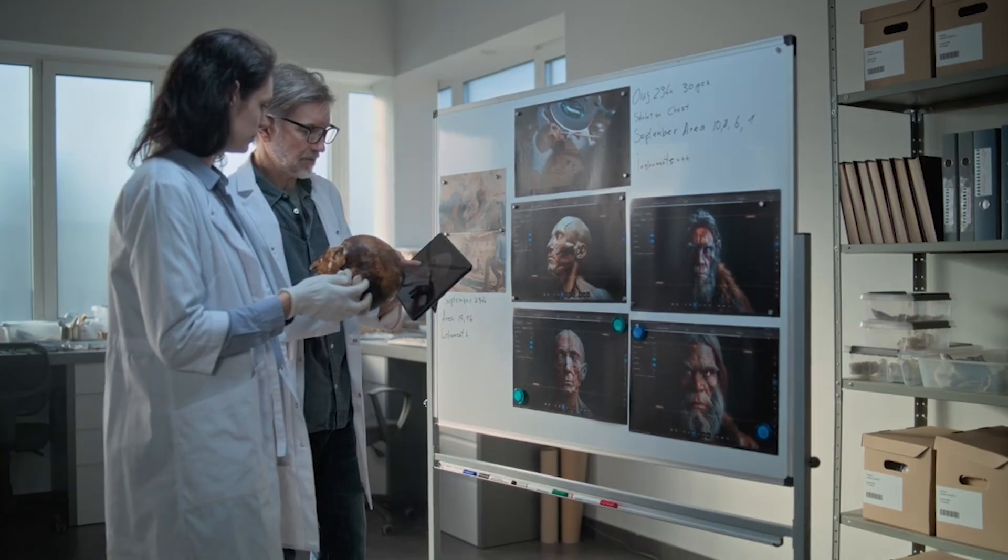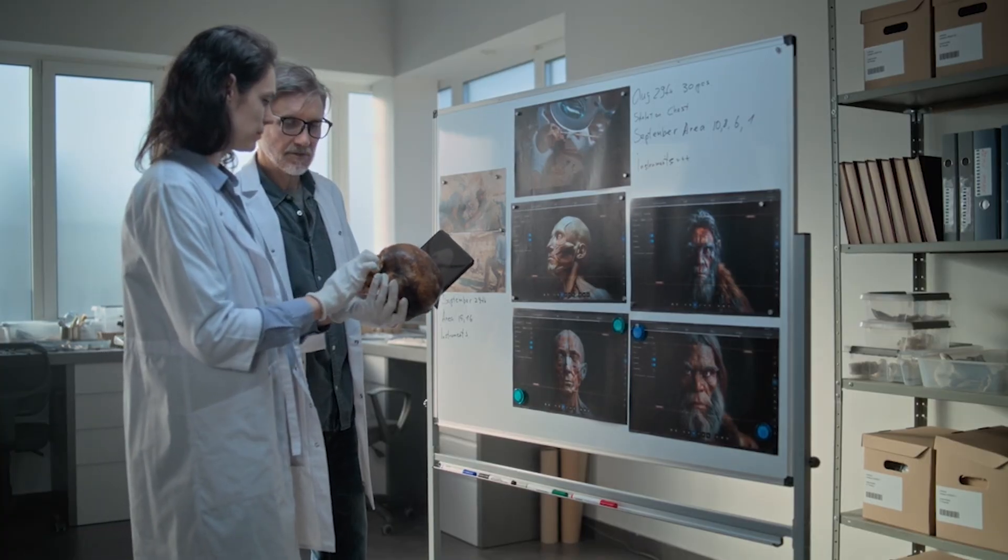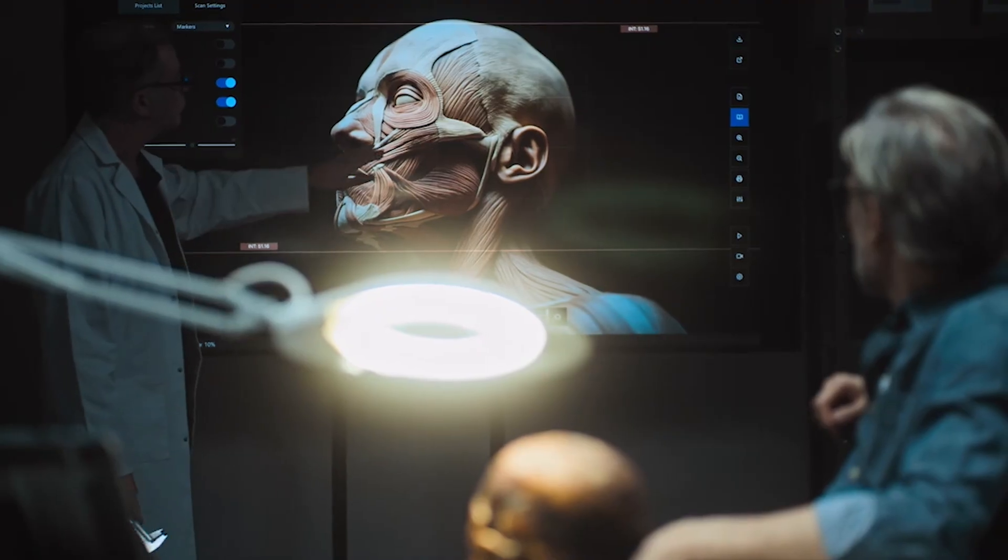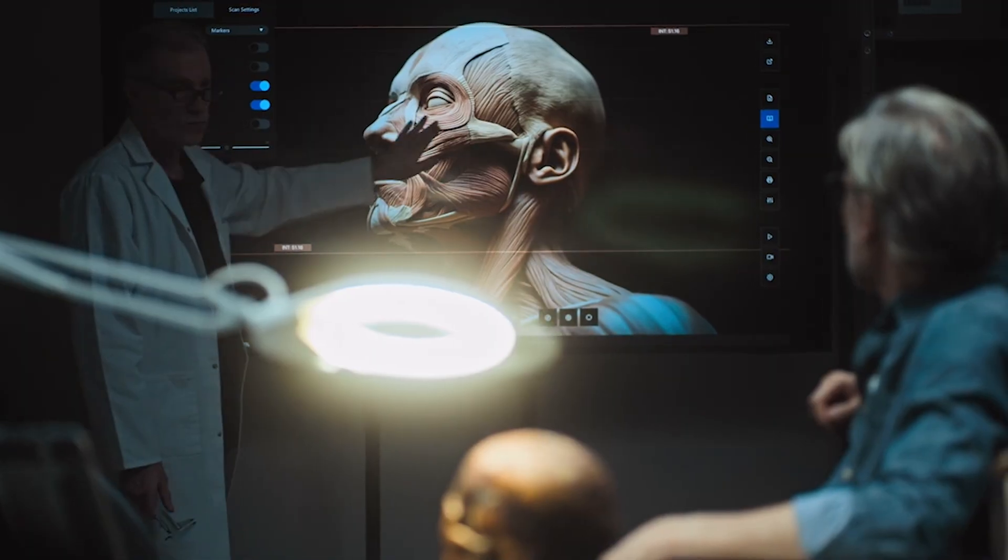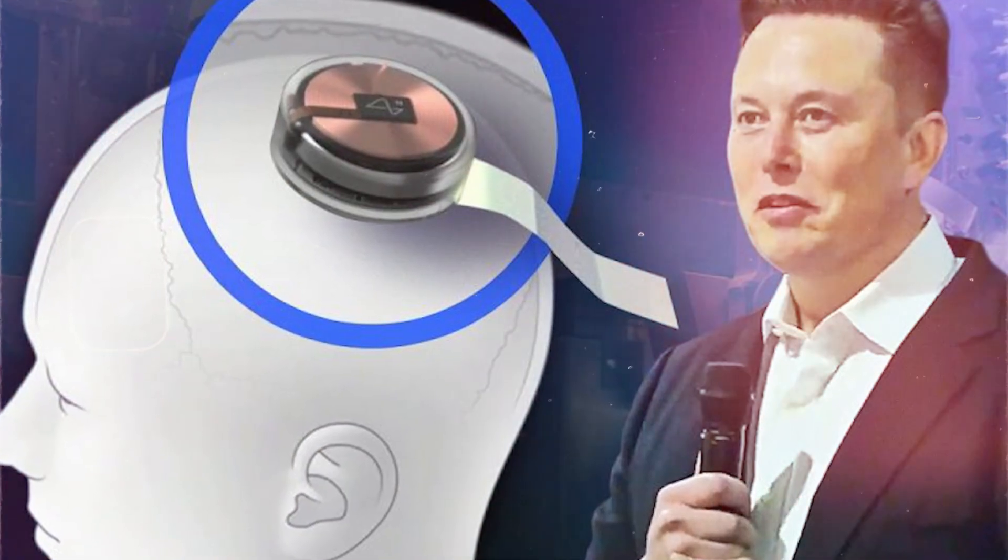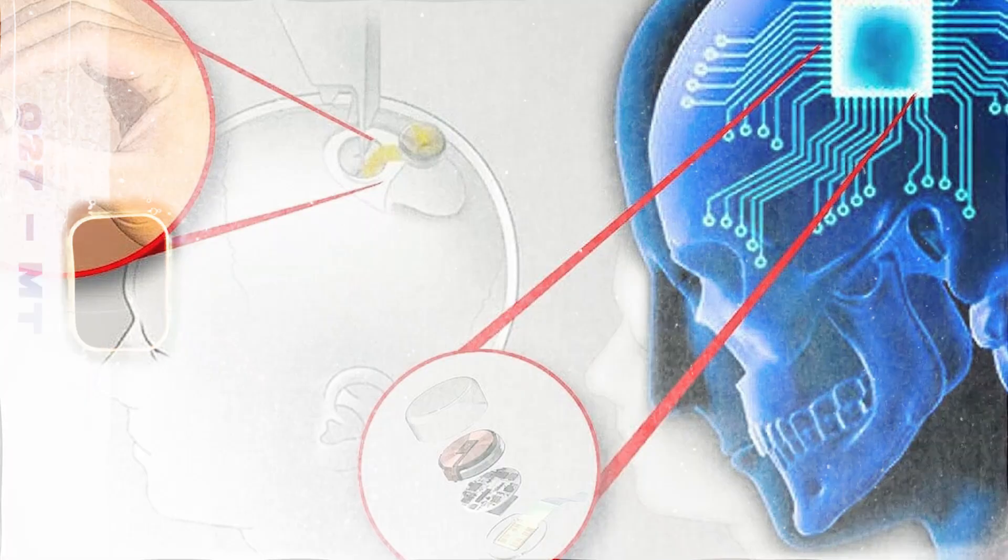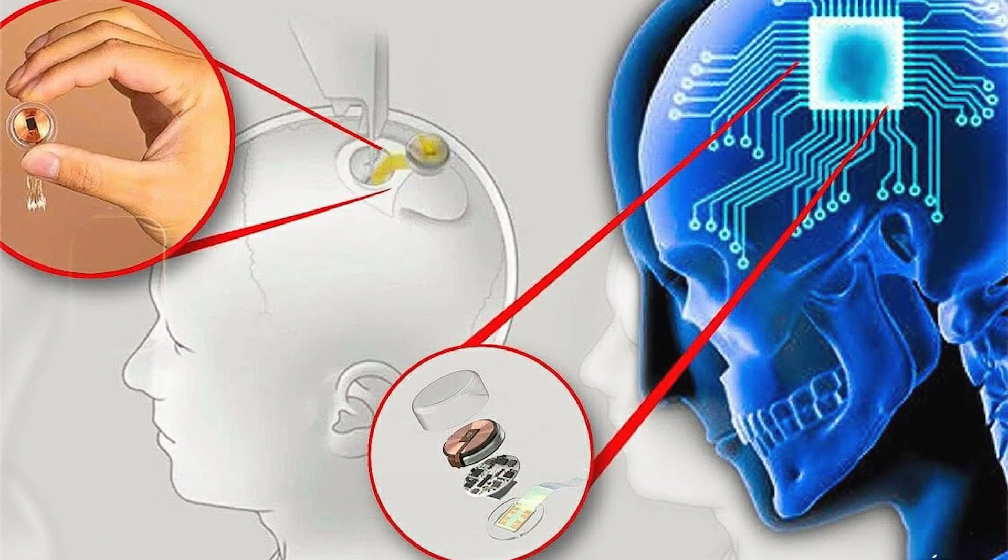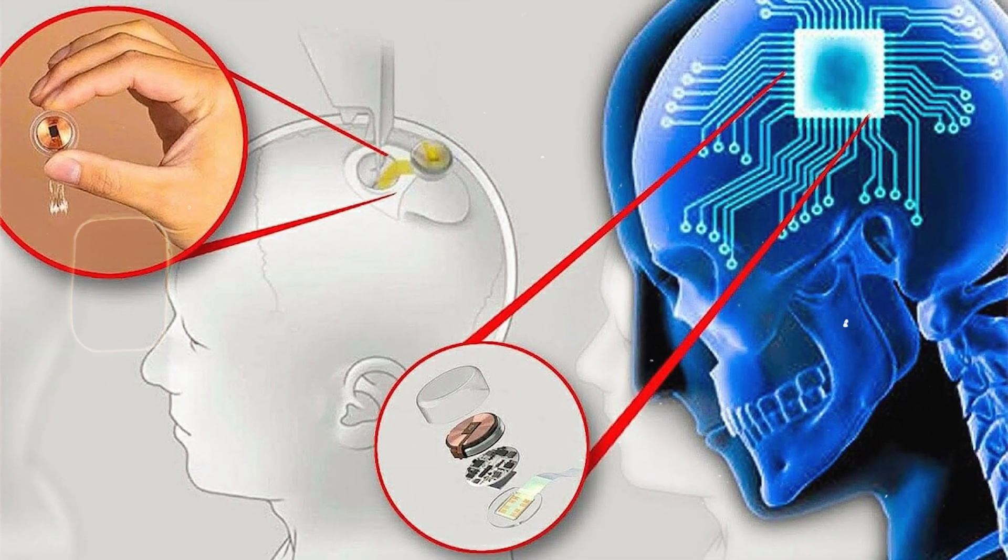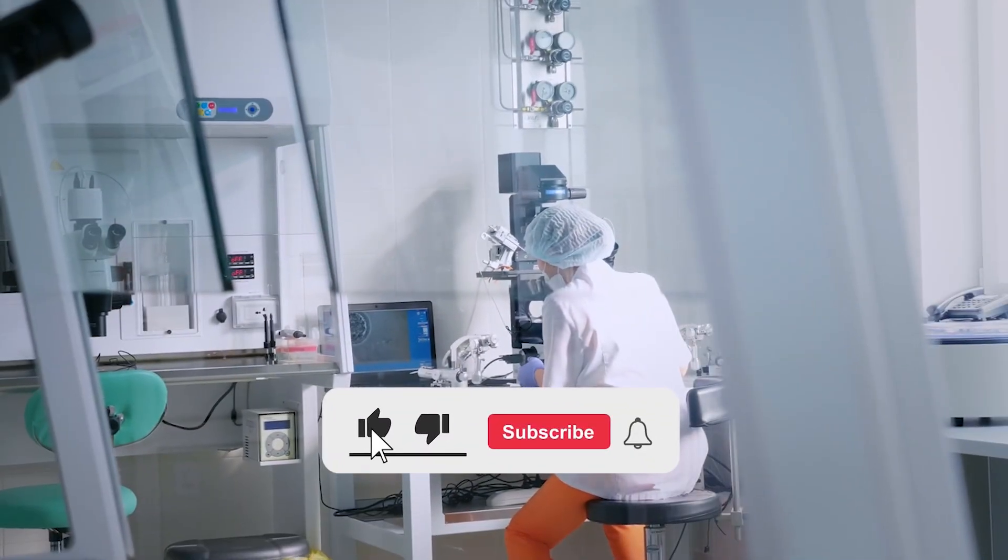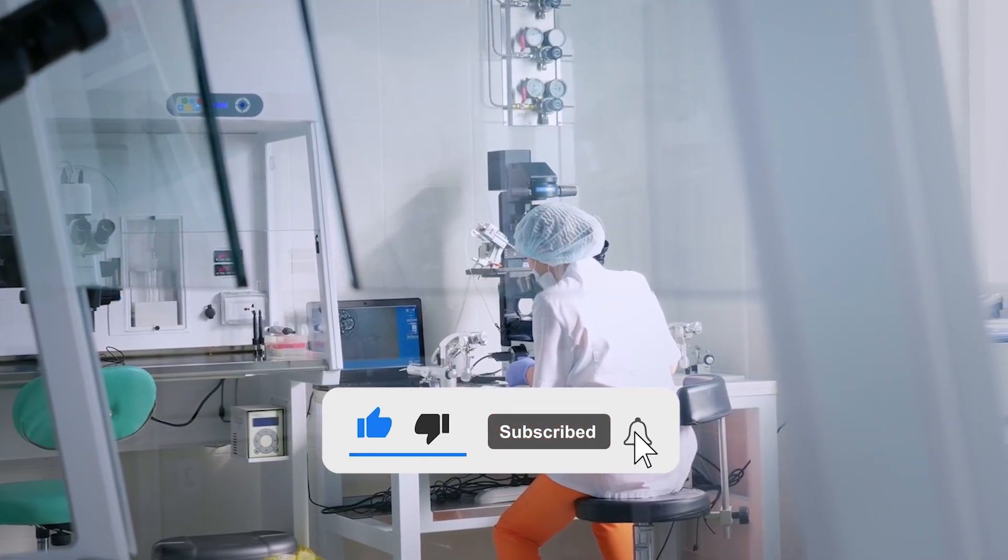The result was nothing short of groundbreaking. He was able to move a computer cursor using only his thoughts. No physical movement, no traditional interface, just his brain communicating directly with a machine. This astonishing breakthrough proved that Neuralink's brain-computer interface could actually work in people, not just in lab animals.